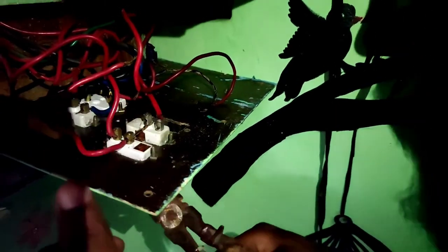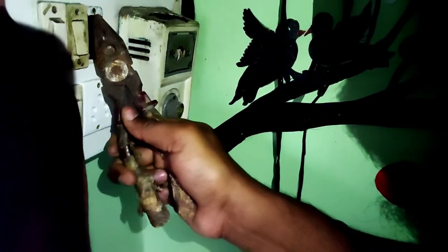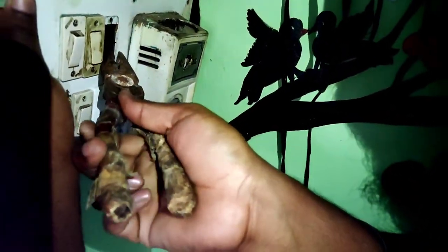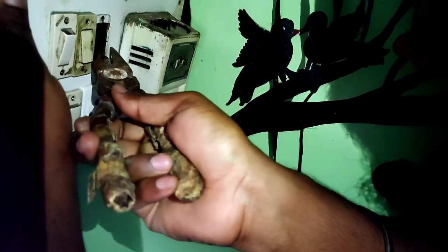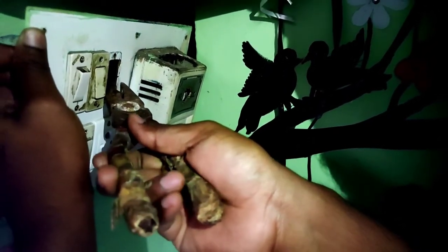There is a tenant here. The fan regulator is not on the wall switchboard. So, we can use the cutting plier to break. Now, we are going to fix the regulator on the switchboard.